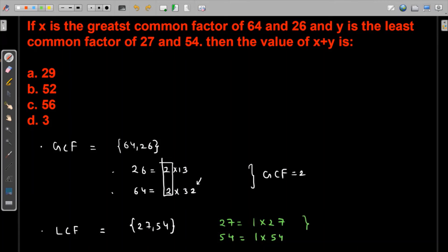So the least common factor is definitely 1. The least common factor is 1, the greatest common factor is 2. Then 2 plus 1 is nothing but 3, which is option d. Thank you.